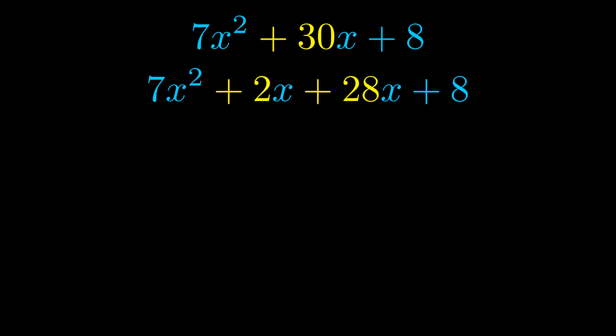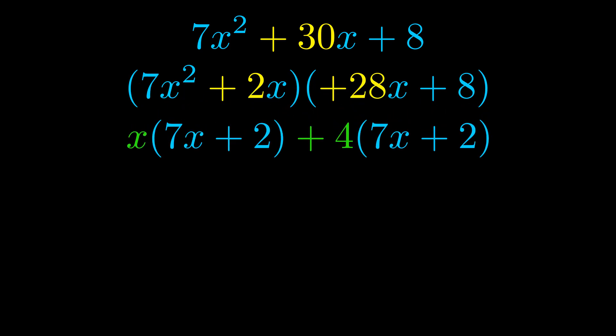Once we've done this, we go ahead and put parentheses around the first term and the last term. And we do that so that we can take the greatest common factor out of both terms. We can see the greatest common factor is now outside in green.